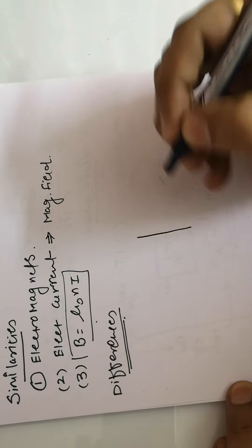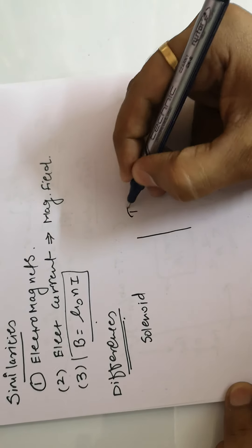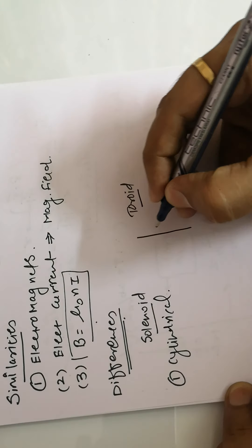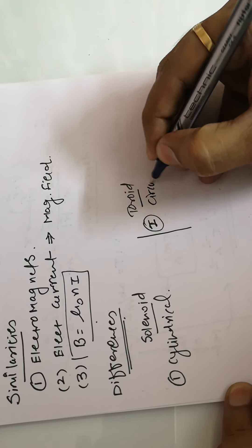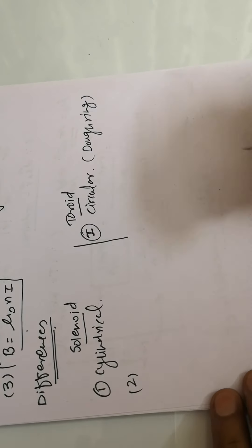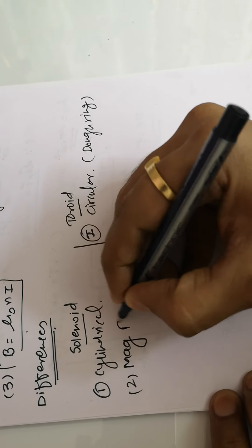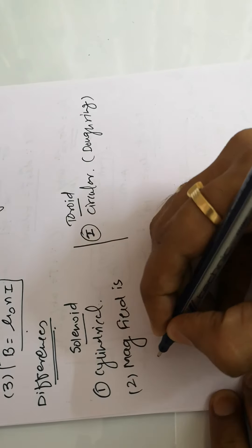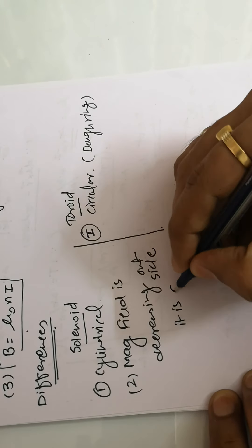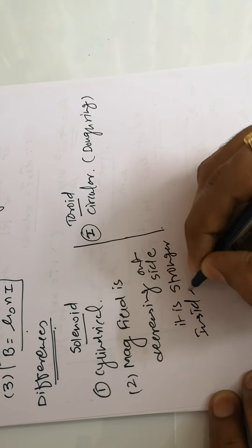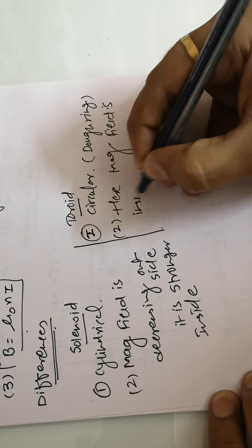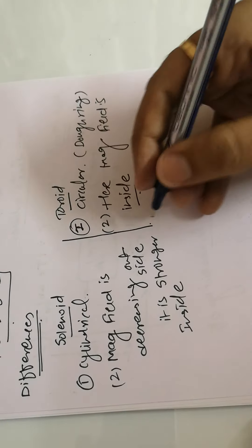Now the differences: First, a solenoid has a cylindrical shape, while a toroid has a circular shape — it is sometimes called a doughnut ring. Second, for a solenoid the magnetic field decreases outside but is stronger inside, whereas for a toroid the magnetic field inside the hollow region is zero because the equal and opposite number of turns cancel each other out, giving a net enclosed current of zero.